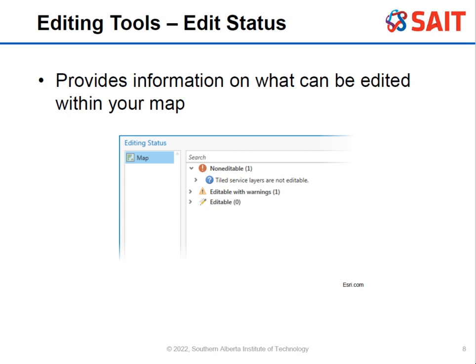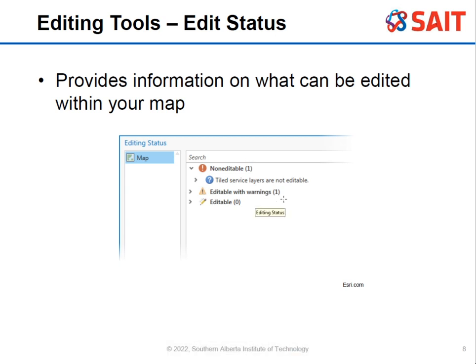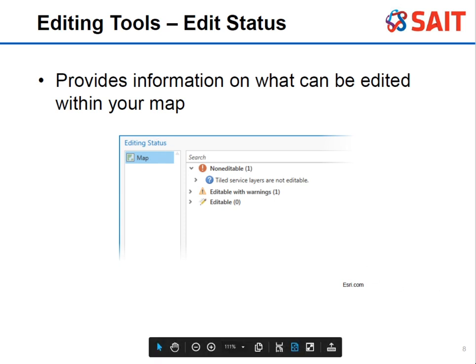If you want to create a new feature, you'll have the editing status that you can view. For example, it'll say you can't edit that, or there's a warning about it, or it's editable. That information is shown in the editing status.